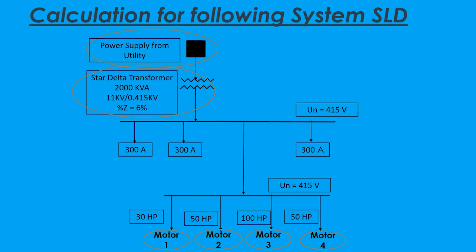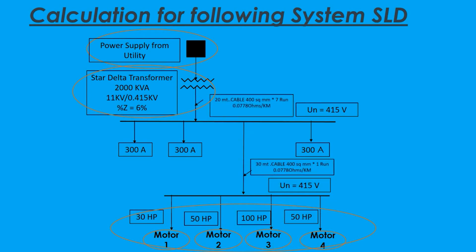This system consists of a source of 11 kilovolts and a transformer of 11 kV by 0.415 kV, with four motors connected as load operating at 415 volts. For power transmission, seven runs of 20 metre 400 square millimetre cable and one run of 30 metre 400 square millimetre cable are used.